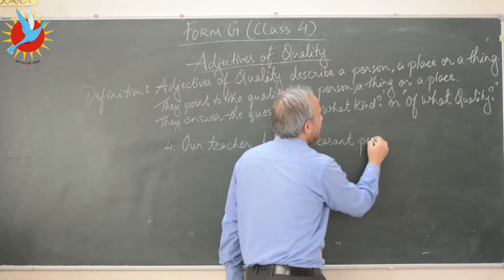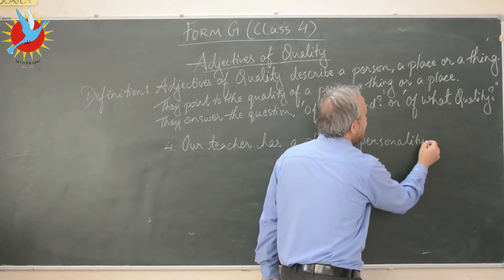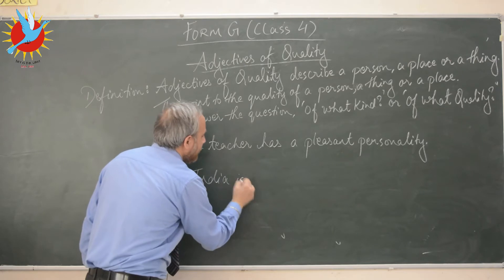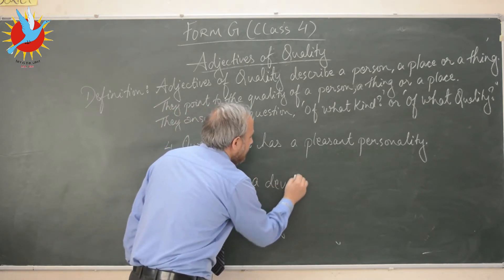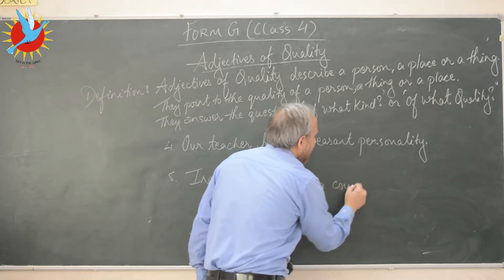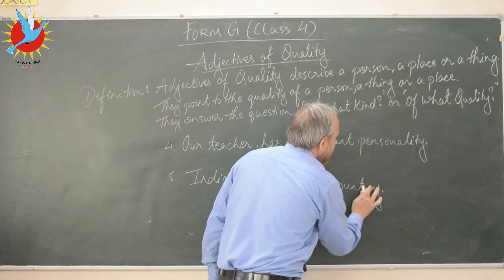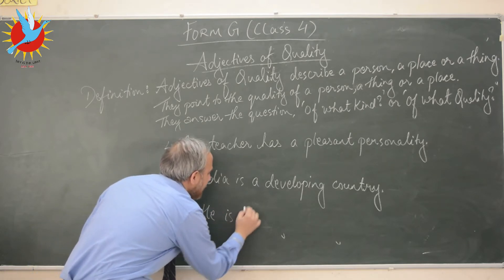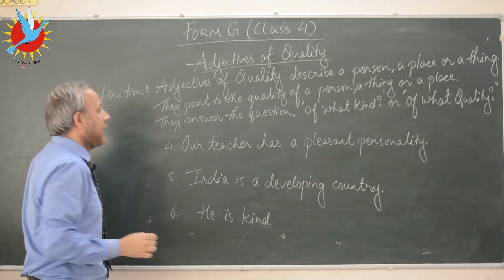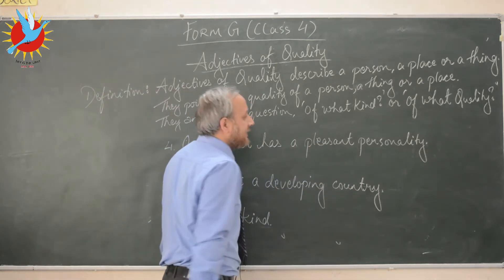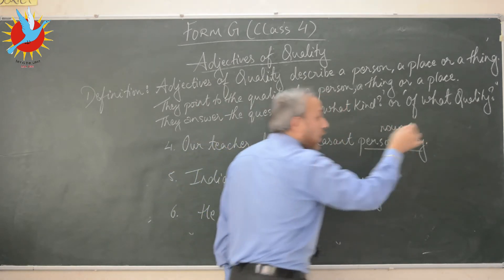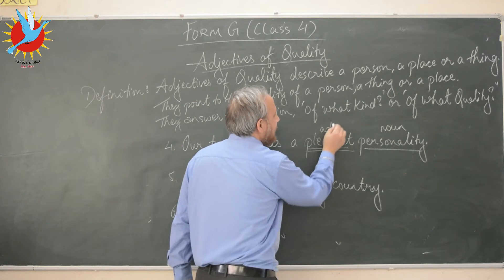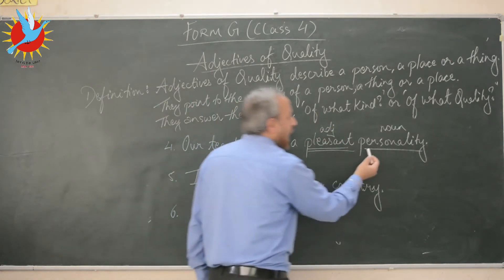Let's look at two more sentences. Sentence number four: 'Our teacher has a pleasant personality.' Sentence number five: 'India is a developing country.' In sentence four, 'personality' is the noun — what kind of personality does our teacher have? Our teacher has a pleasant personality, so 'pleasant' is a descriptive adjective giving more information about the noun 'personality.'